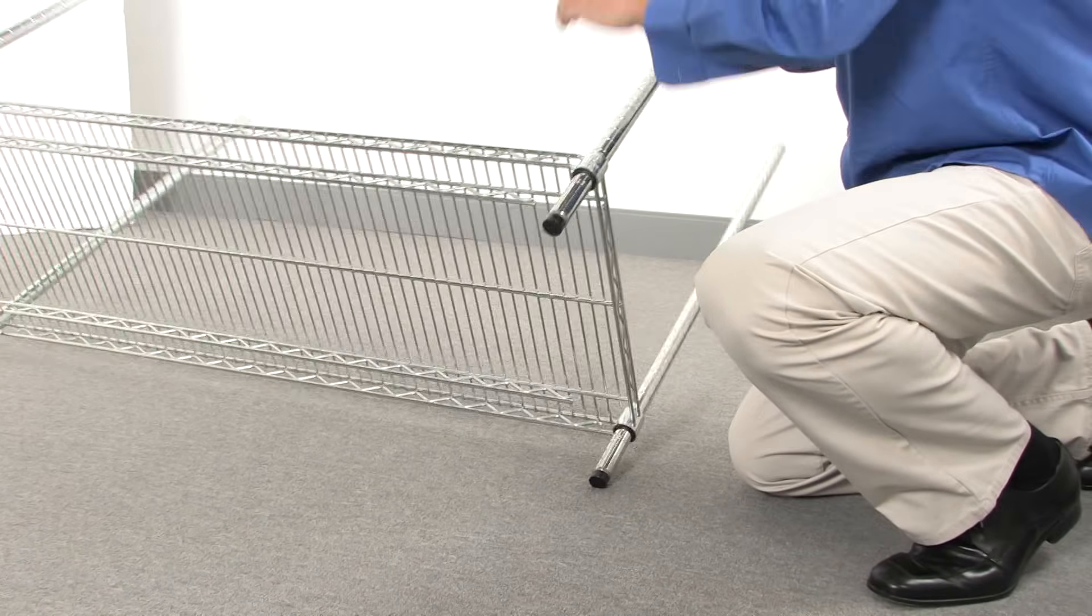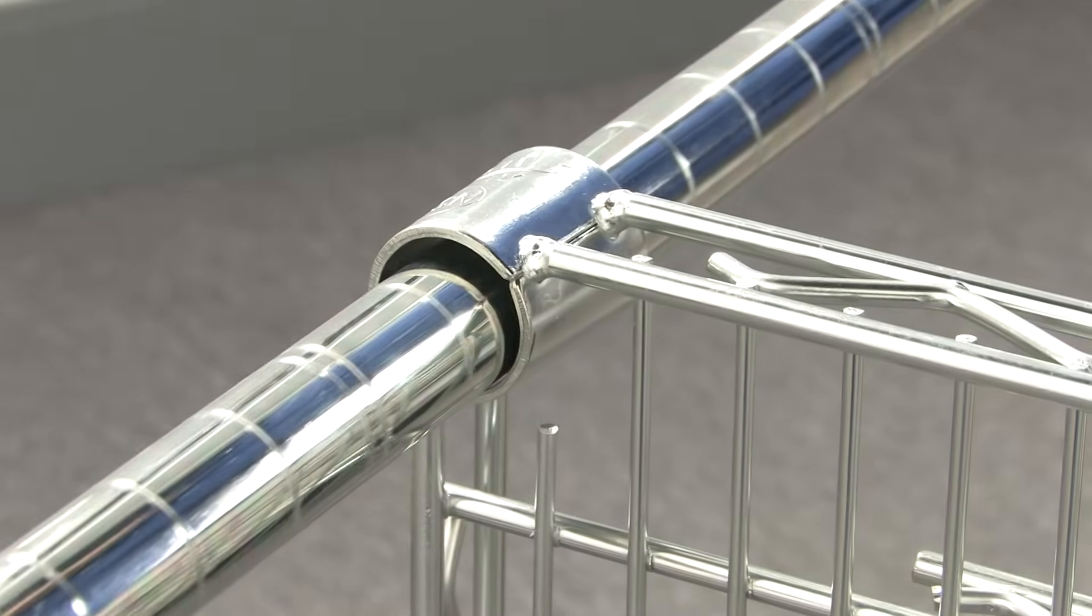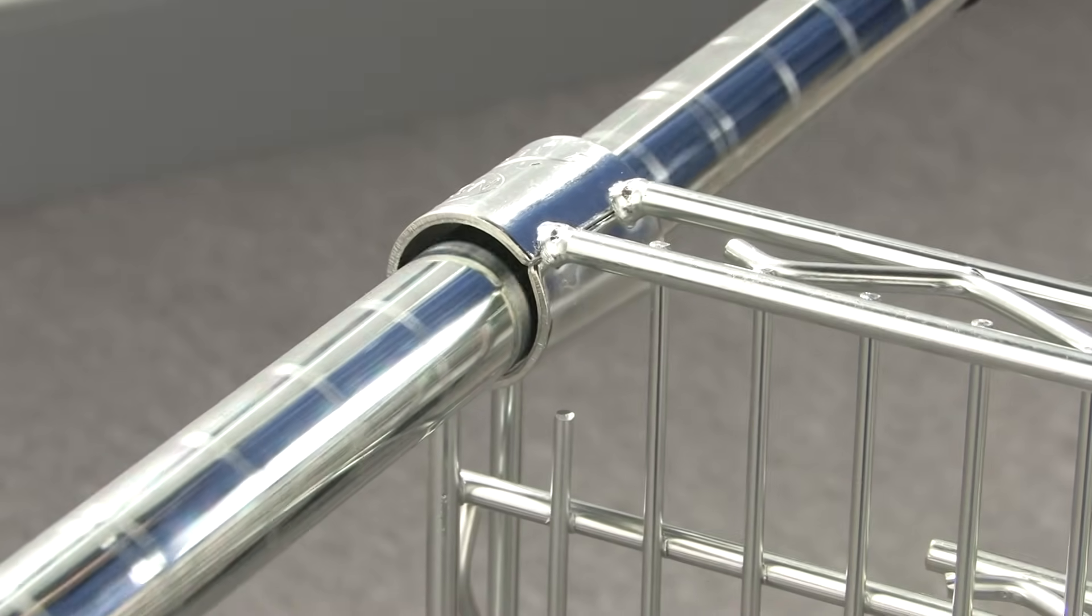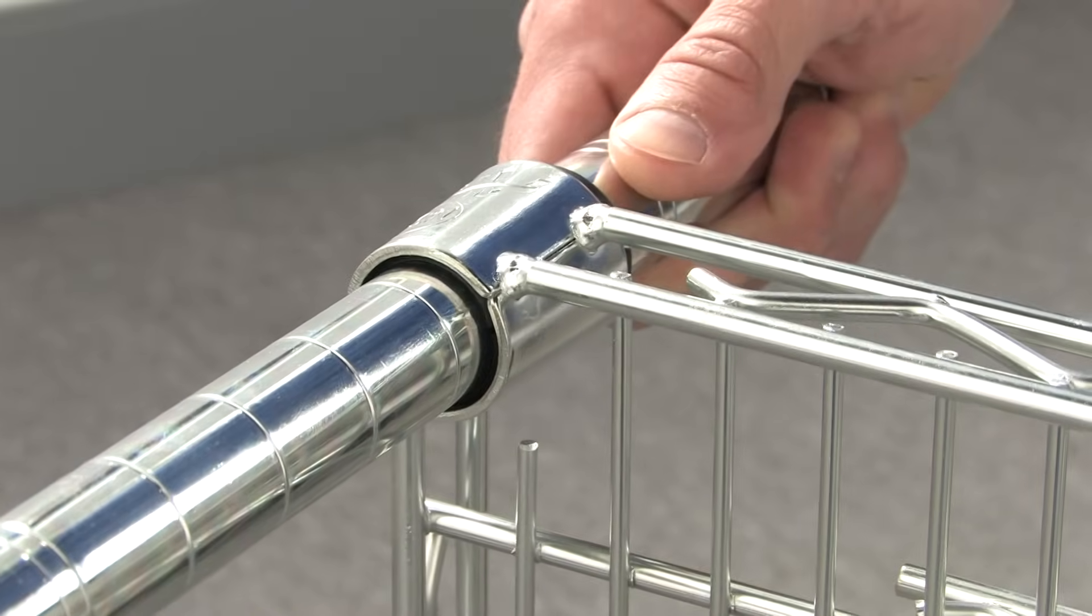Place your shelf on its side. Holding the shelf, slide each pole through the shelf cylinders starting from the top of the pole.